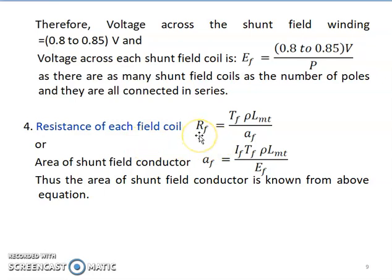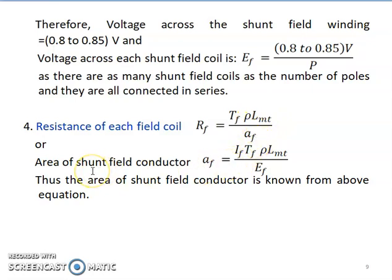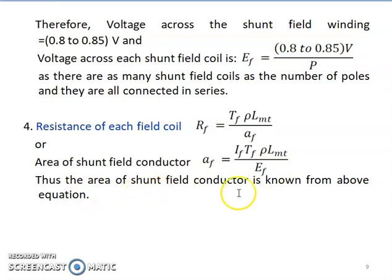The fourth step is calculation of resistance of each field coil. Using the basic expression R = ρL/A, but accounting for the number of turns, the resistance of each field coil is Rf = Tf × ρ × Lmt / Af. From this, the area of the shunt field conductor is Af = Tf × ρ × Lmt / Ef. Thus the area of the shunt field conductor is known from this equation.